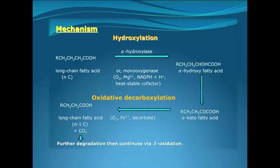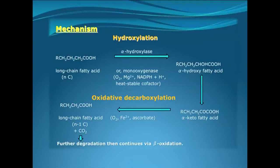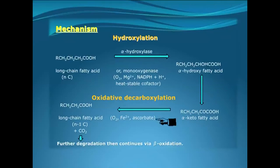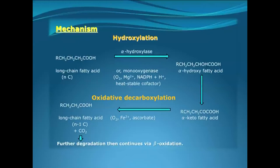Looking at this mechanism in detail as shown in this slide: the long-chain fatty acid with N carbon atoms is acted upon by the enzyme alpha-hydroxylase or monooxygenase in the presence of oxygen, magnesium ion, NADPH and H+, together with a heat-stable cofactor, generating an alpha-hydroxy fatty acid with an OH group introduced at C2 or C-alpha. This is then converted to the alpha-keto fatty acid, which undergoes oxidative decarboxylation in the presence of oxygen, ferrous iron, and ascorbate to produce a fatty acid shortened by one carbon — that is, N-minus-one carbons — with the one carbon unit released as carbon dioxide.